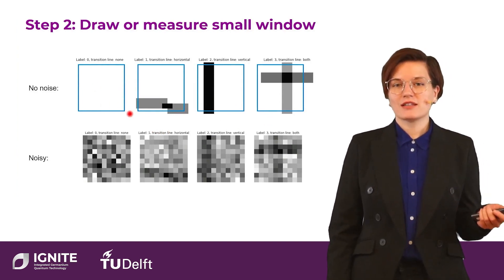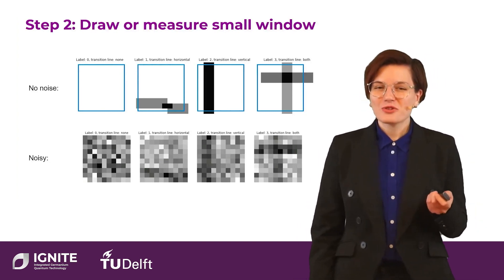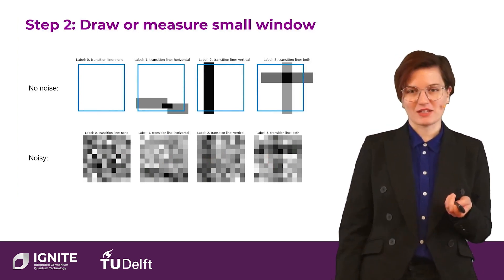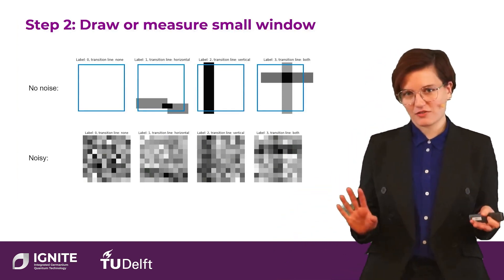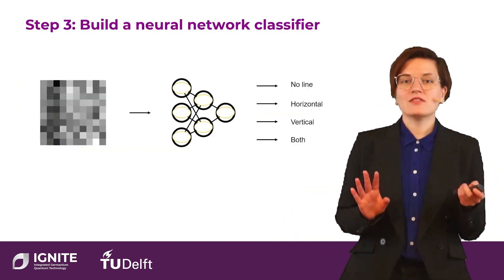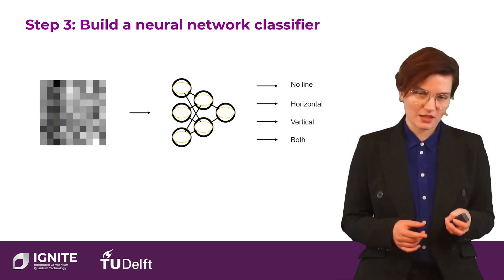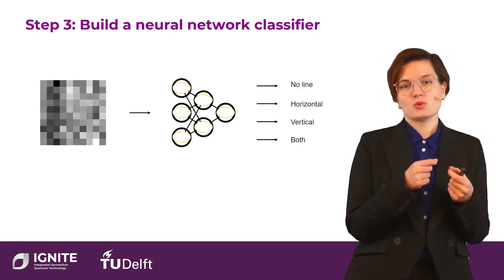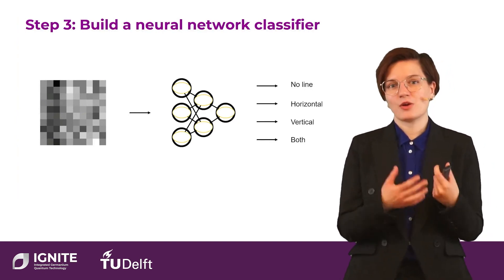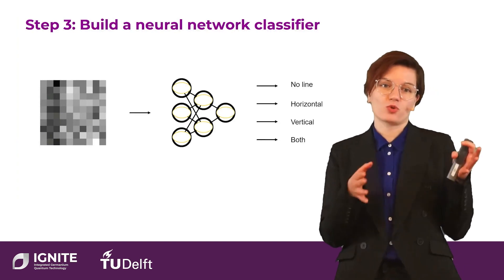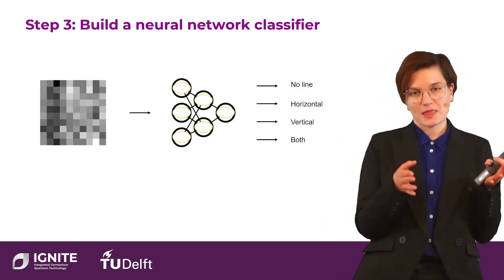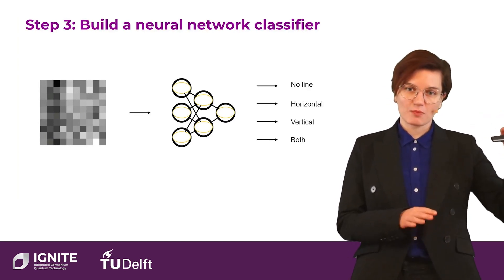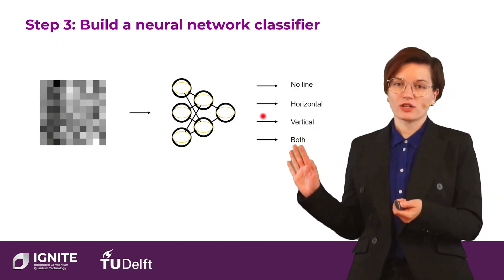In the no-noise data, you can distinguish these four cases from each other easily. When you look at the noisy data, it's not so simple with the naked eye at a rough measurement resolution. Nonetheless, we can just jump into doing the neural network thing. We draw a lot of these patches — the small measurement sections — using simulated data, making it easy to assign a label to each square. Then we train a neural network to take a square as input and assign one of these four labels on the output.